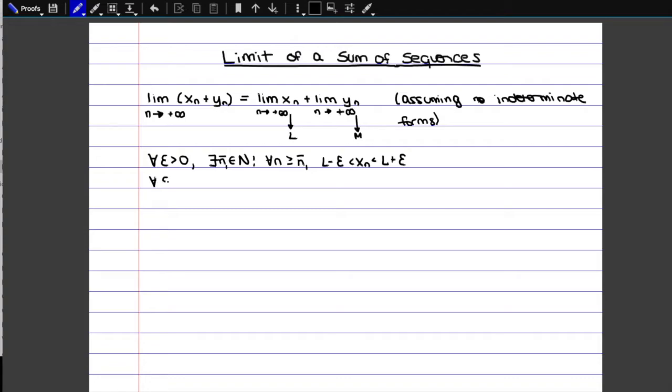We can then say exactly the same thing for the other sequence, except that we're going to have a different n bar, possibly. So just to be safe, we're going to call it n bar 2. So you don't want to assume that they're the same point for both.